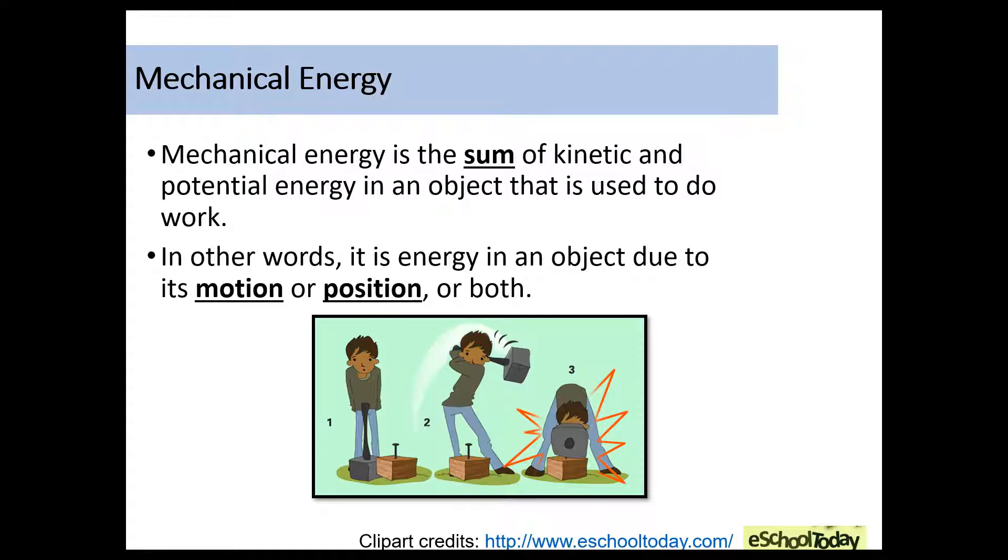So in the first part of this illustration, we would say this is an example of potential energy because nothing's really happening. It's just stored energy. And then we can see that potential energy is converted into kinetic energy when he pulls the hammer back and he swings down on the nail. And then in number three, there's a few things happening here. We could say this kinetic energy is converted into sound energy because obviously it's going to make a sound. And then there's some different energies that are happening as well. So you can see here how energy can change or transform.